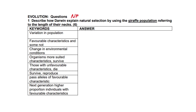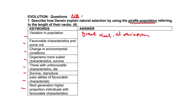Now for a very important exam question: describe how Darwin explains natural selection using the giraffe population, referring specifically to the length of their necks — a six-marker. Firstly, there is a great deal of variation amongst the giraffe population, with some having favorable characteristics and some not. Some giraffes have long necks and some do not. When there is a change in environmental conditions or competition, natural selection is pushed further.